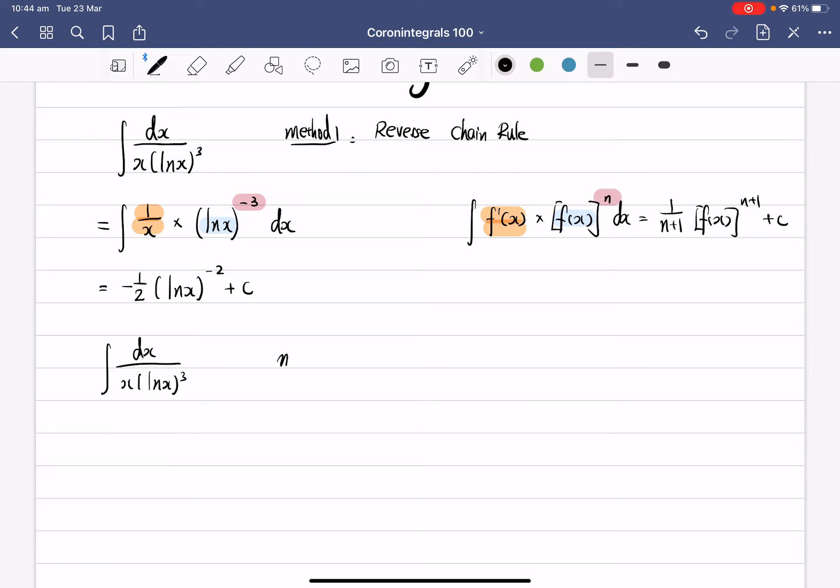All right, so method 2: substitution. If you want to use the substitution method, basically what you're replacing is what's inside the brackets. So you want to replace the lnx. We're going to let u equal lnx.